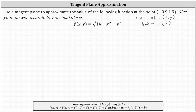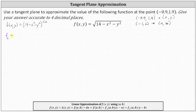Let's determine the first-order partials of f. We'll write the square root using the rational exponent of one-half, so f(x, y) equals the quantity (14 minus x squared minus y squared) raised to the power of one-half. For the partial of f with respect to x, we differentiate with respect to x treating y as a constant: one-half times the base raised to the power of negative one-half, times the derivative of the base with respect to x, which is negative 2x.